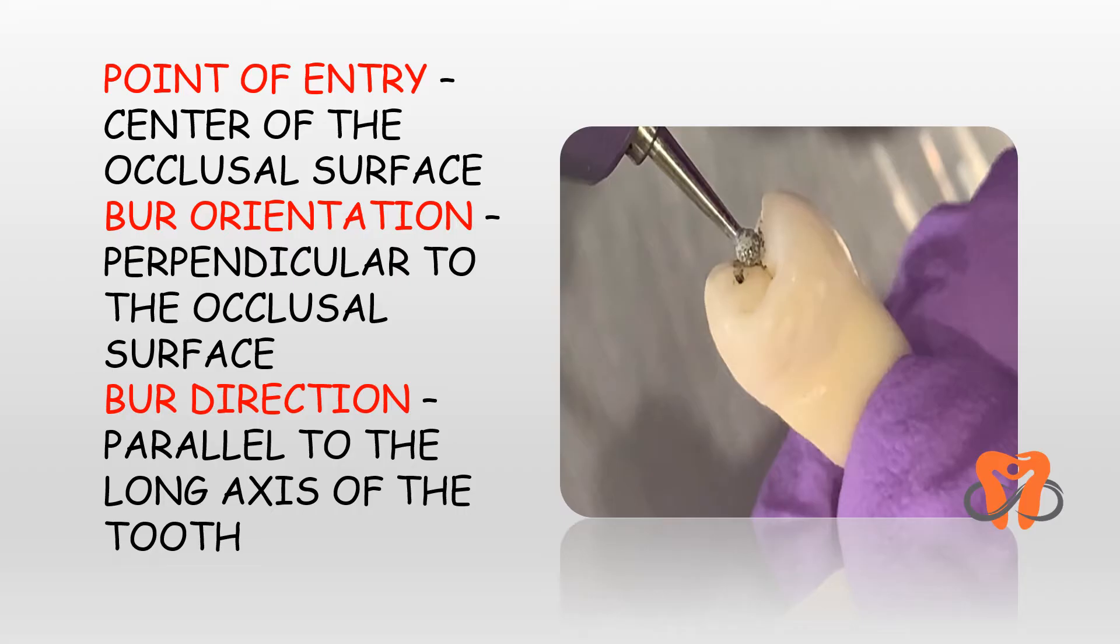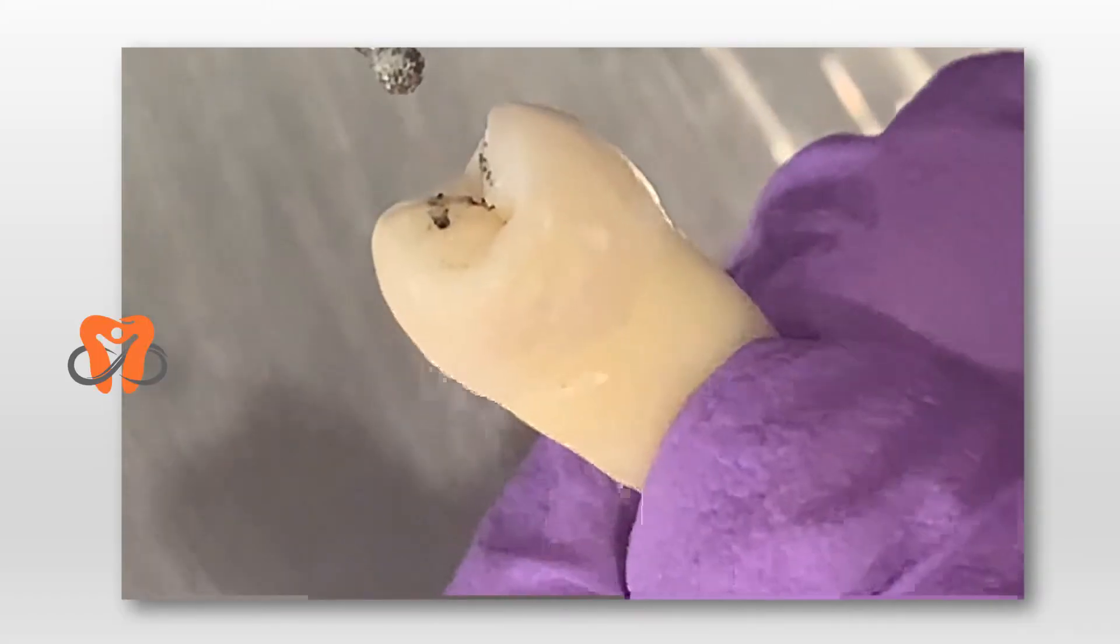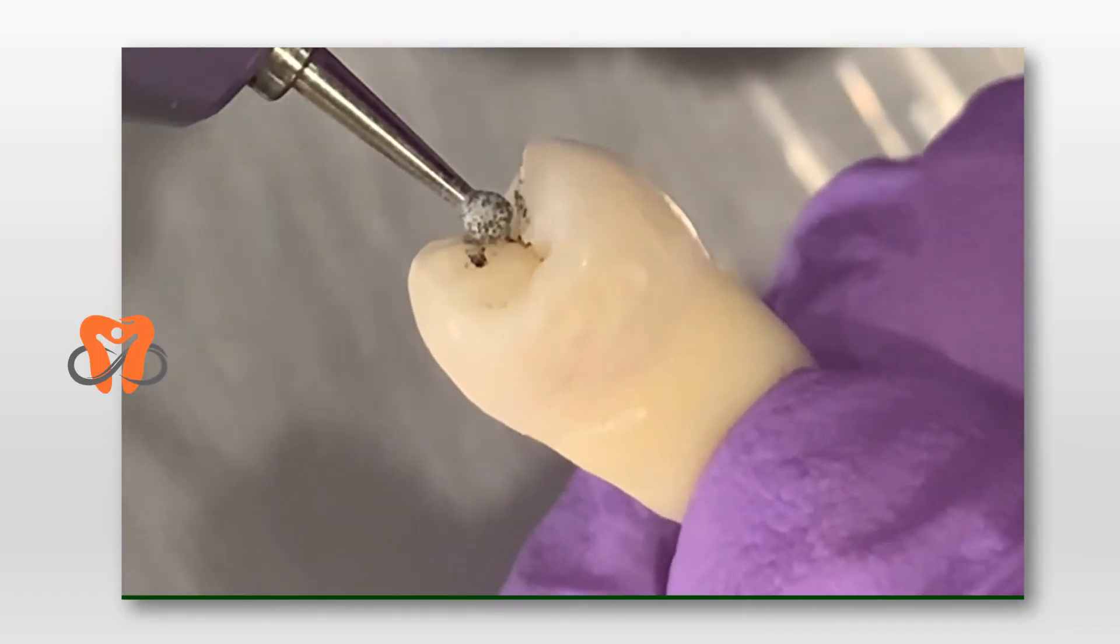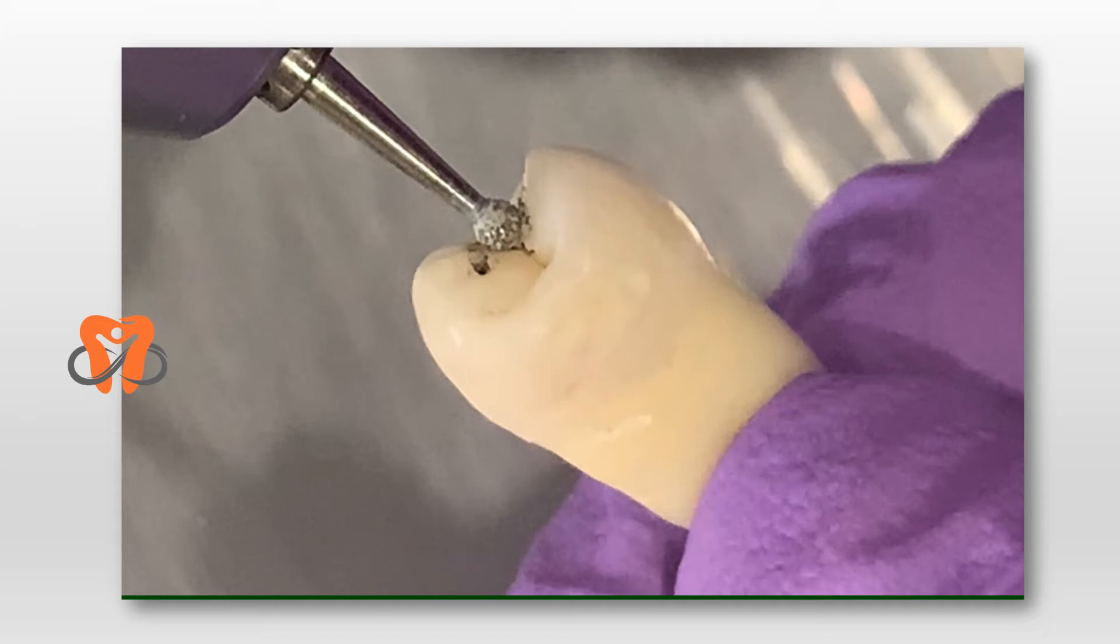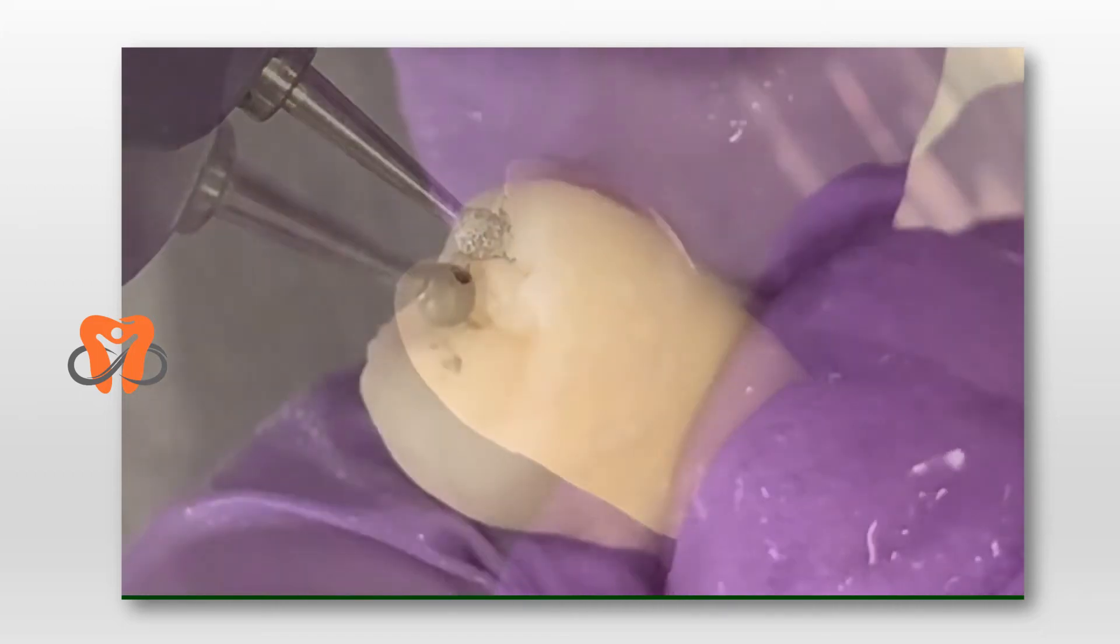The point of entry is at the center of the occlusal surface. The burr orientation is perpendicular to the occlusal surface, and the burr direction is parallel to the long axis of the tooth. Position the burr perpendicular to the occlusal surface in this manner and start the cutting.